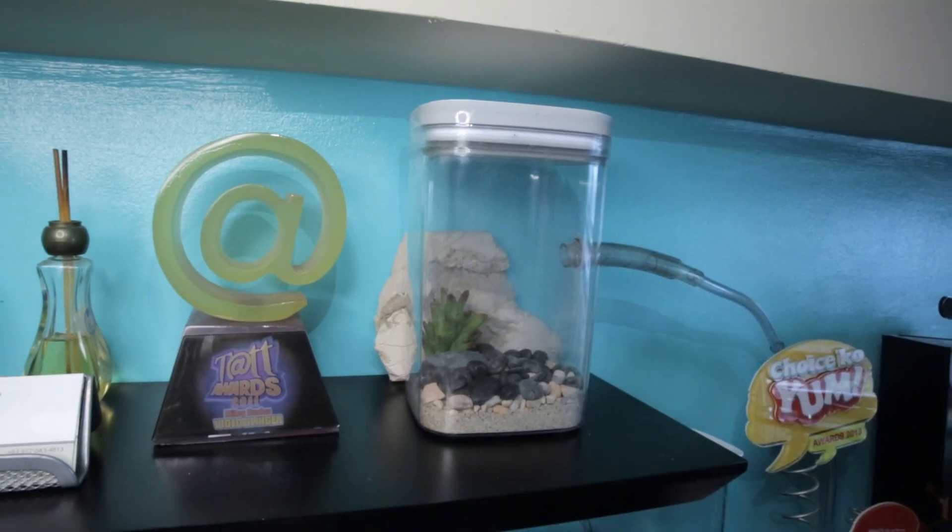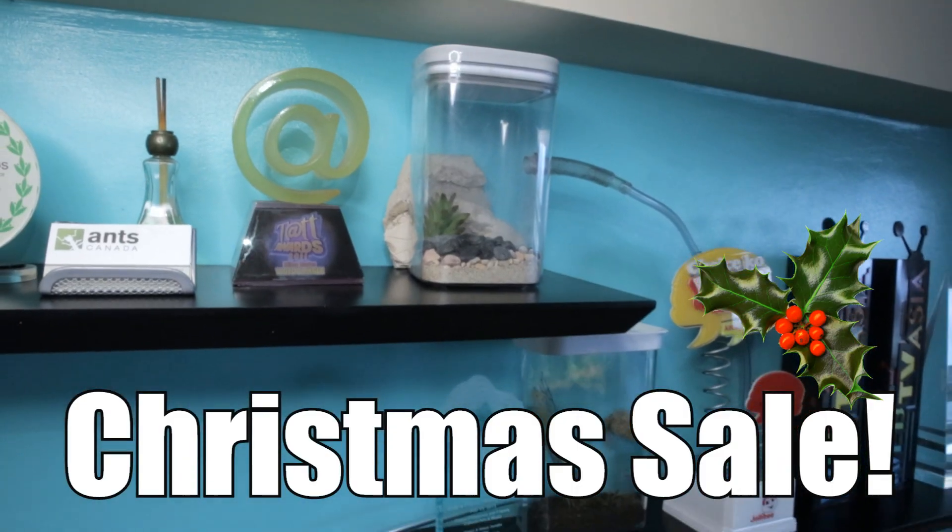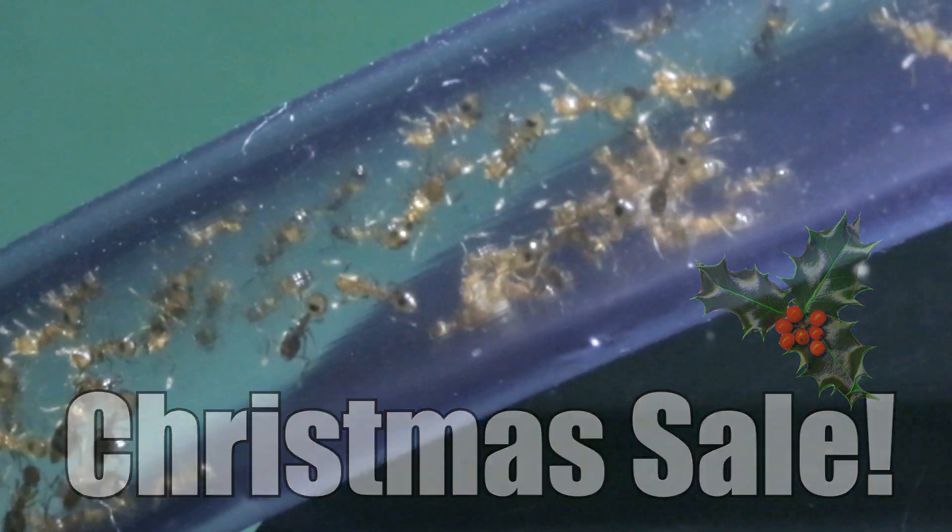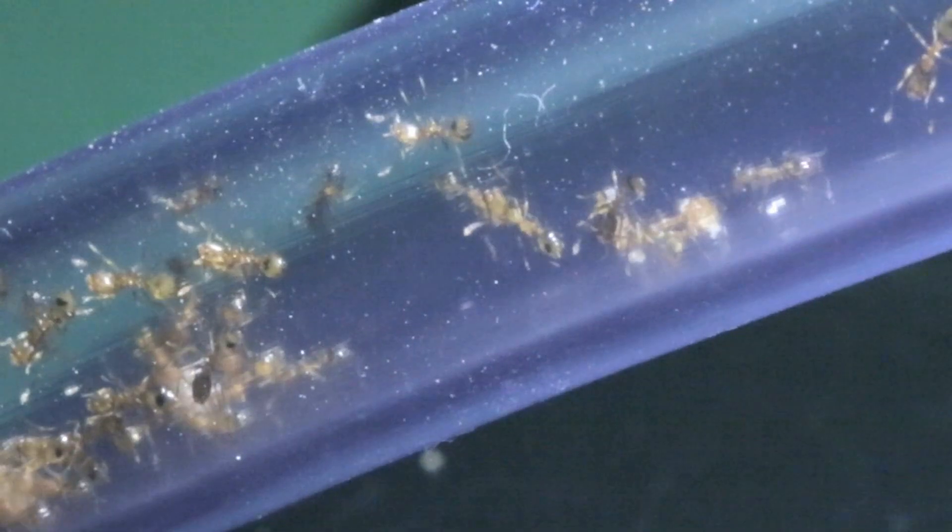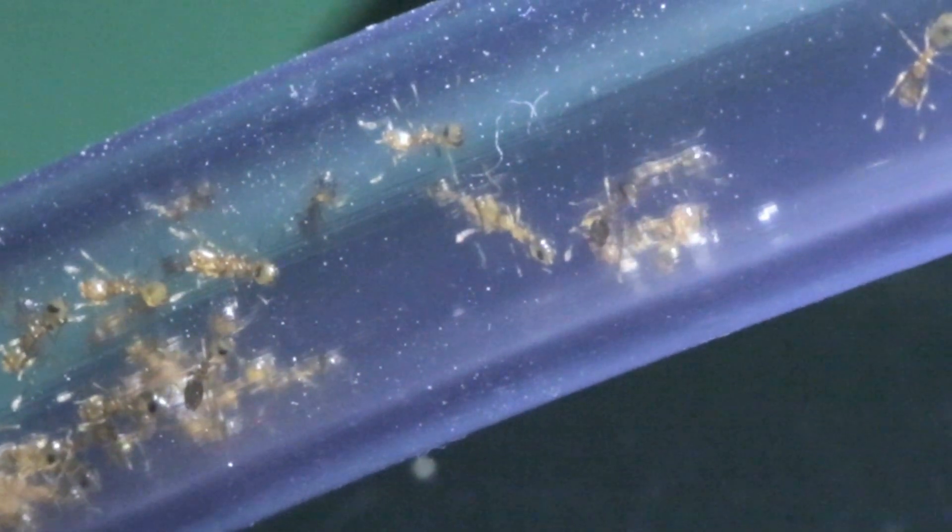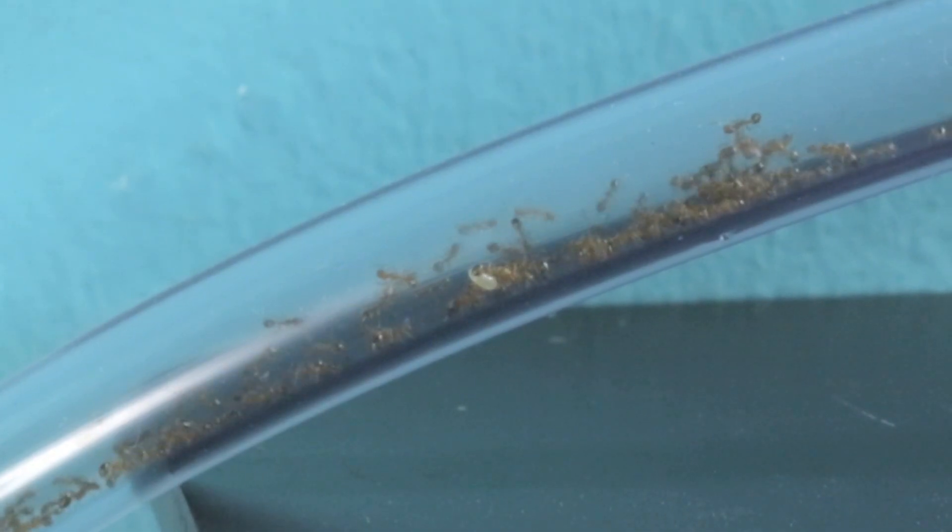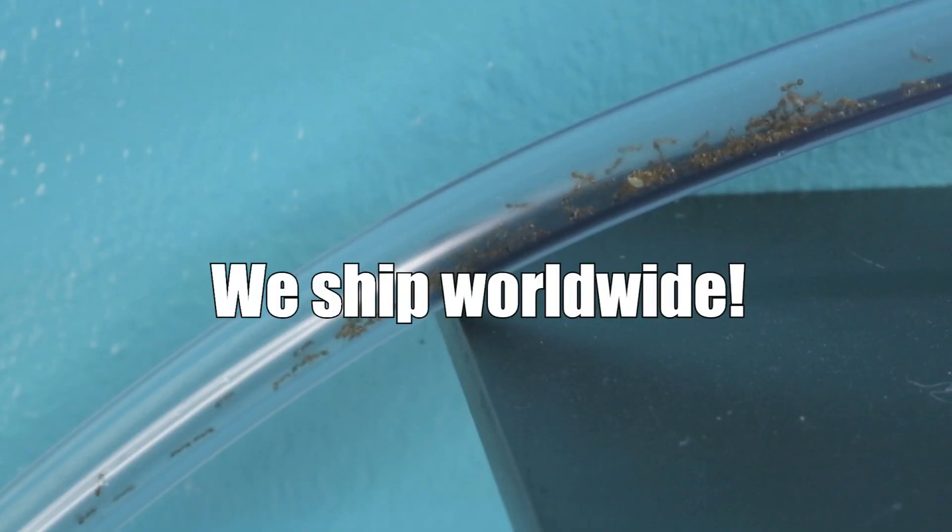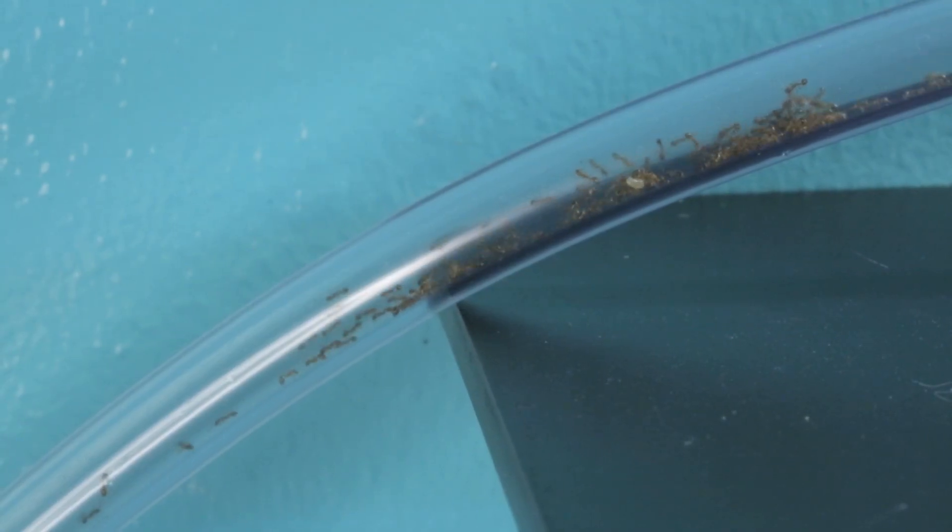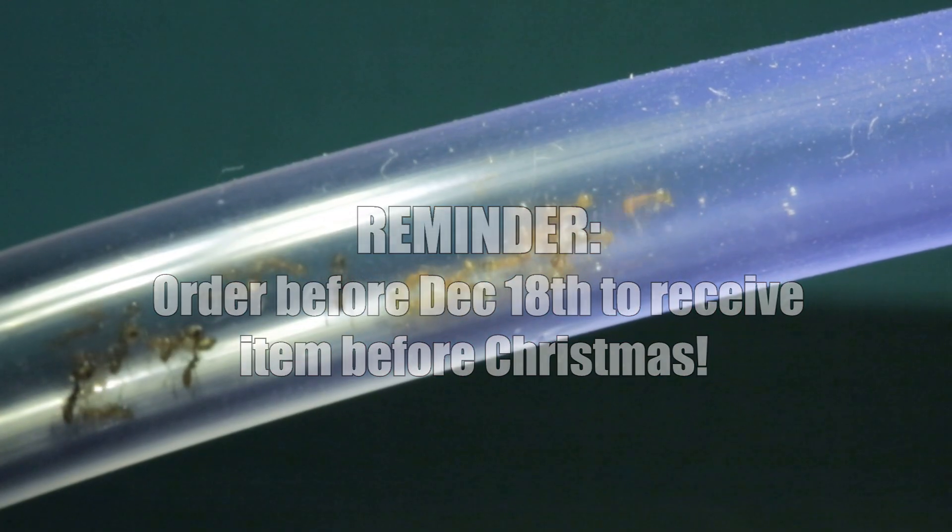In case you haven't heard yet, our annual Christmas sale at AntCanada.com is in full effect. This year we have a great sale on the brand new Hybrid Nest 2.0 and our all-you-need Formica Hybrid Nest Gear Pack. So if you've always wanted to get into ant keeping, I have left links in the description box to these sale items so you can pick one up for yourself, or someone you love this Christmas. We ship worldwide, but just a reminder, you must order before December 18th to get your order before Christmas, so go get it ASAP!